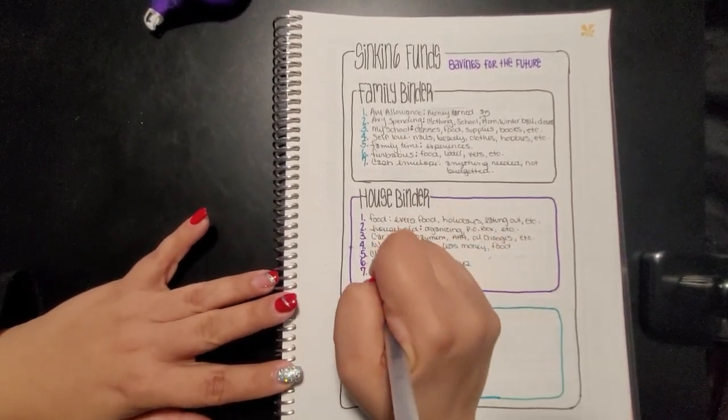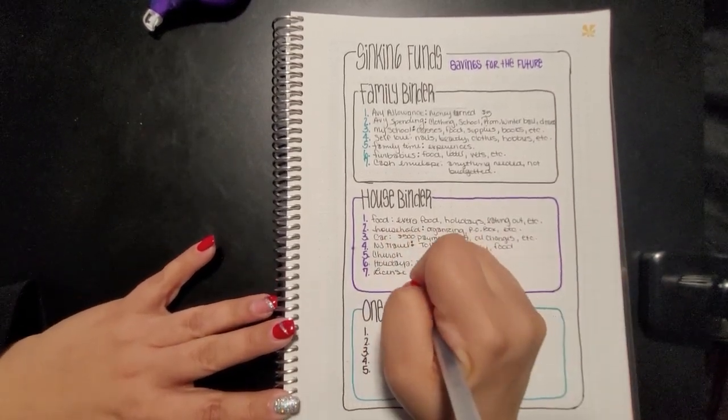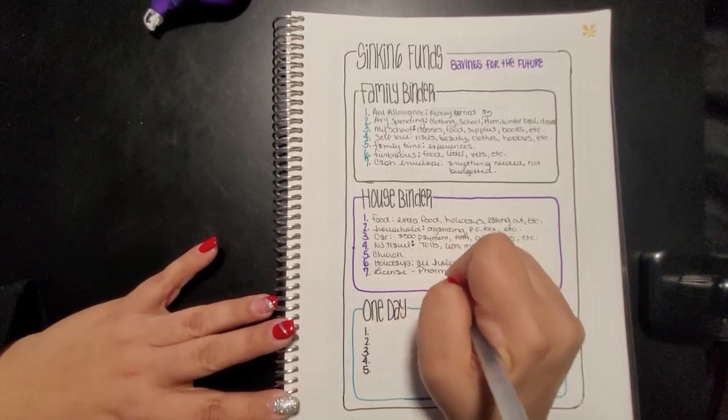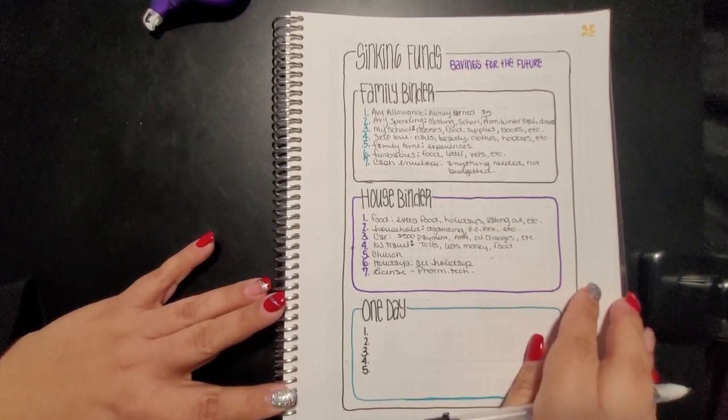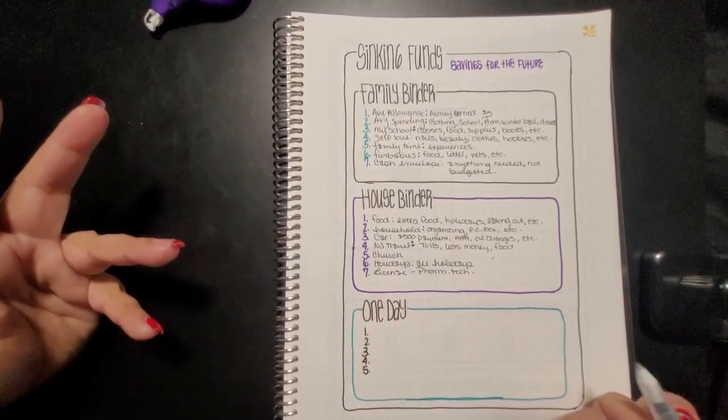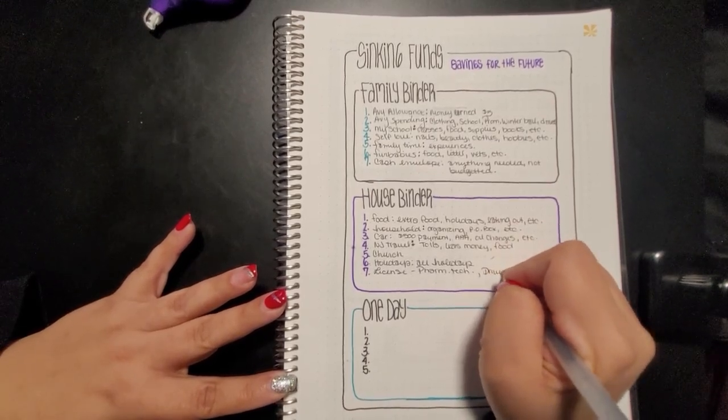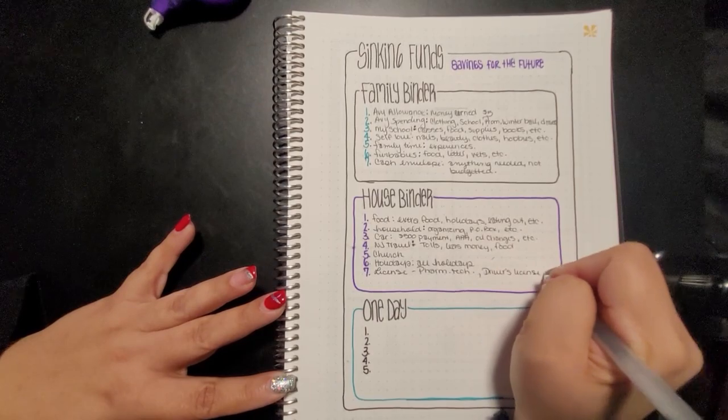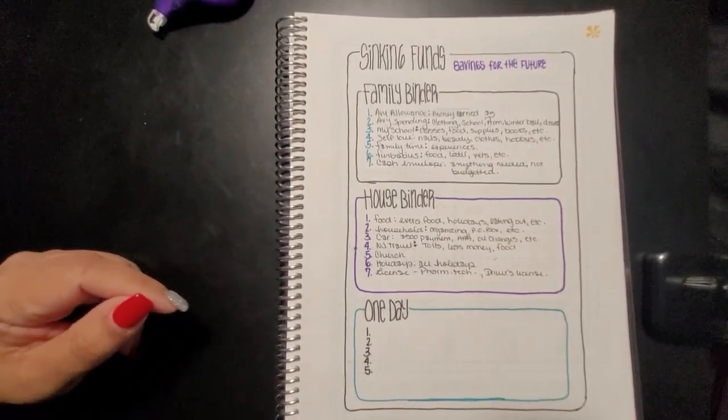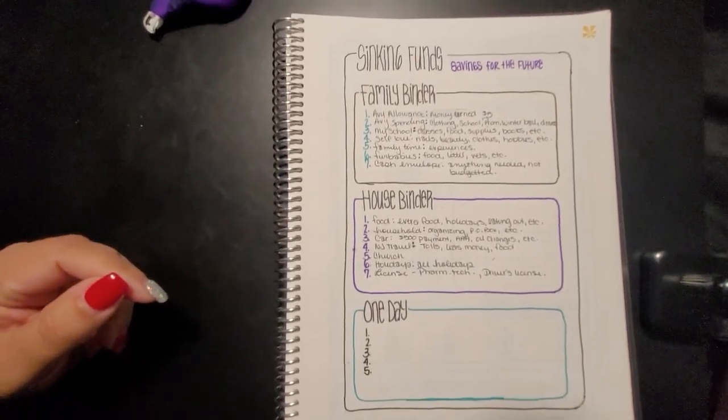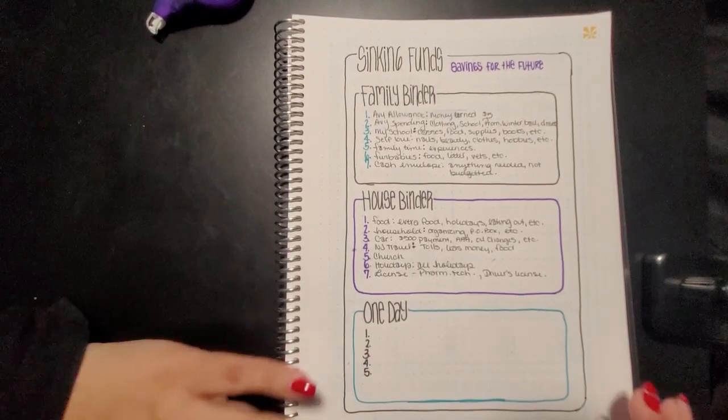And then the next one is going to be licenses. Because I have a pharmacy license and I have to renew every year and I always forget about it. I just need to just keep this in there. Also I'm going to have to renew my driver's license which I'm going to put in here because why not, right?